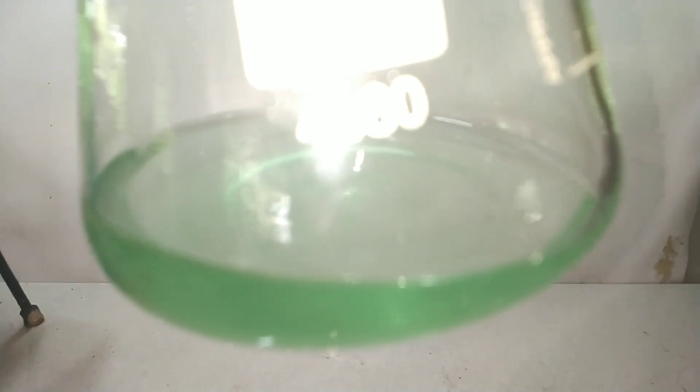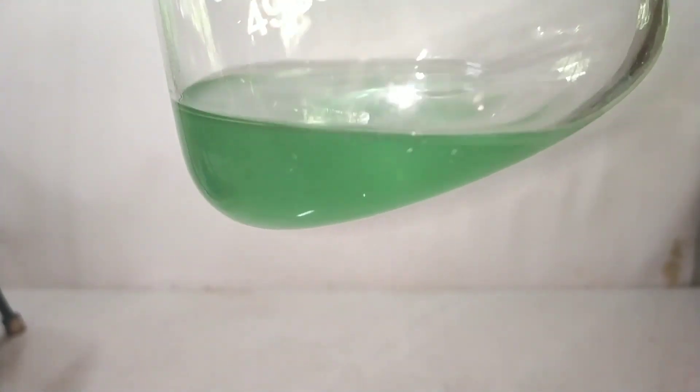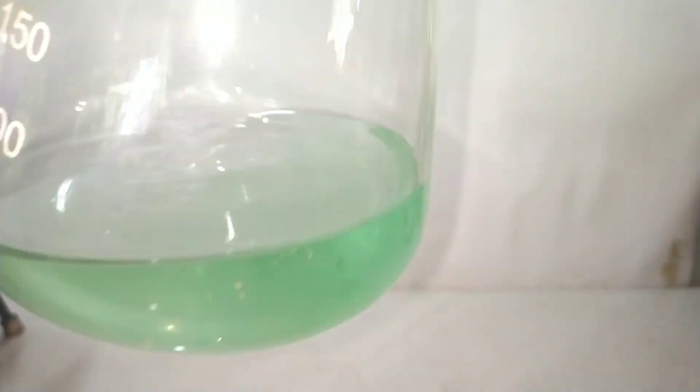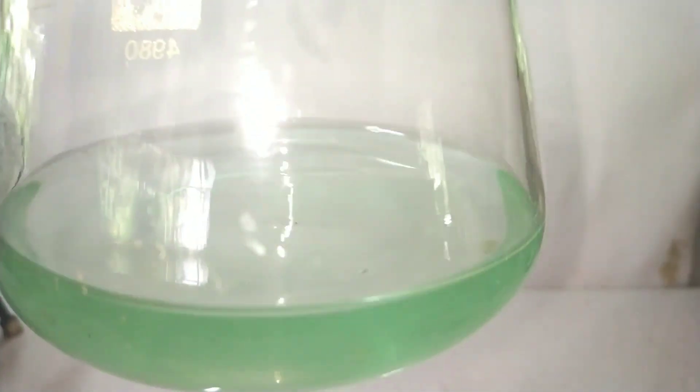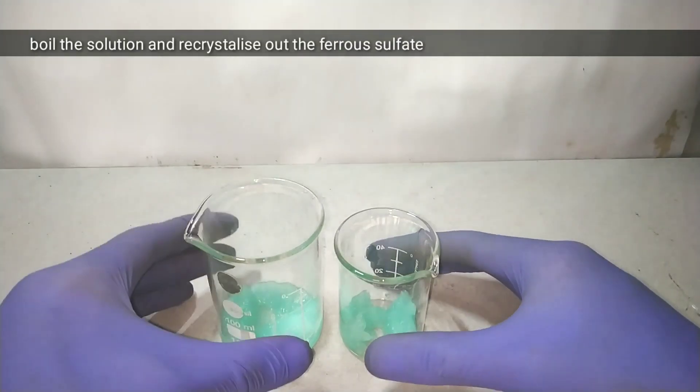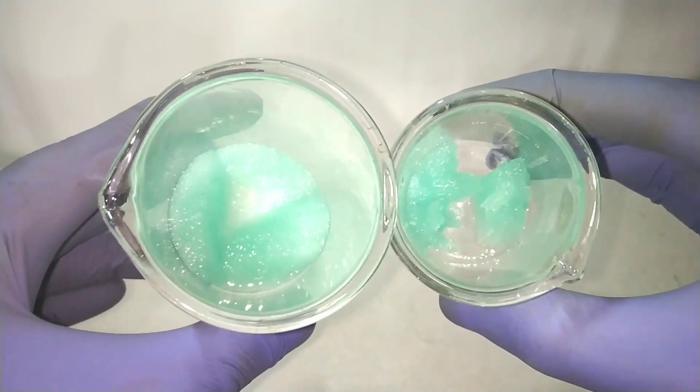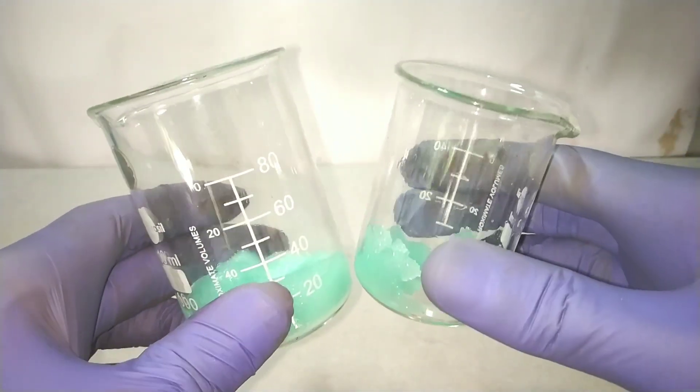The color of the filtrate is green. Iron salt being a transition metal salt gives colored compounds due to partially filled D sub shell. Then I boiled the solution and recrystallized the ferrous sulfate from it. You can see the crystals of ferrous sulfate with its light green color.